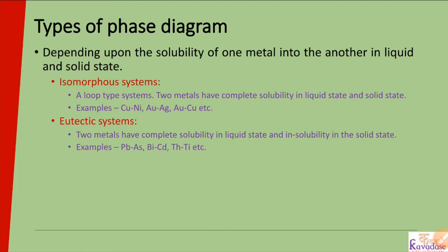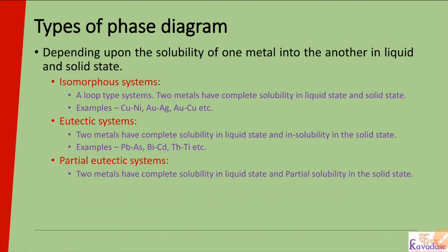Examples of eutectic systems are Pb-Sn, Bi-Cd, and Th-Ti. The third type is the partial eutectic system, where two metals have complete solubility in liquid state and partial solubility in solid state — meaning they are not completely soluble but partially soluble in solid state.